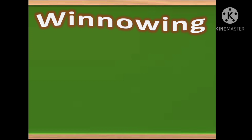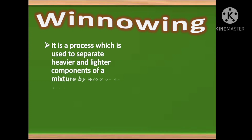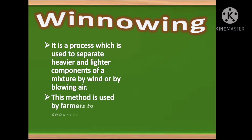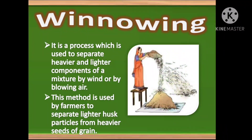In this video, we shall be studying about the remaining two methods of separation: winnowing and sieving. First of all, what is winnowing? It is a process which is used to separate heavier and lighter components of a mixture by wind or by blowing air.